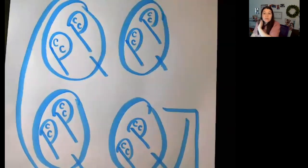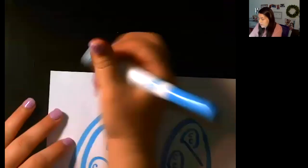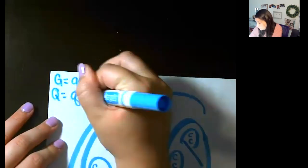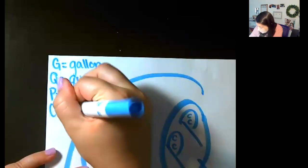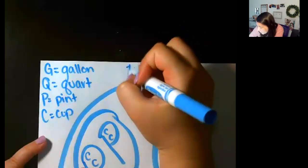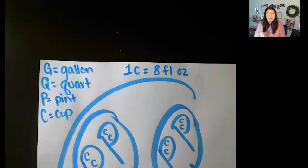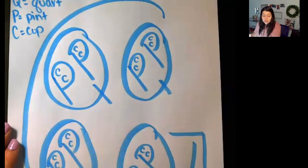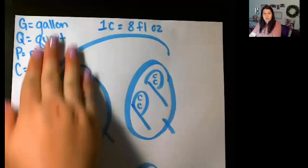So this is just a little chart to help you so you don't have to memorize these, and it's a lot less confusing than the original chart. Remember your G is a gallon, your Q is a quart, your P is a pint, and your C is a cup. One more thing we want to add is that one cup equals eight fluid ounces. We were dealing with ounces in our last lesson, but when we're talking about liquid we need to make sure we say it's a fluid ounce — we put FL in front.